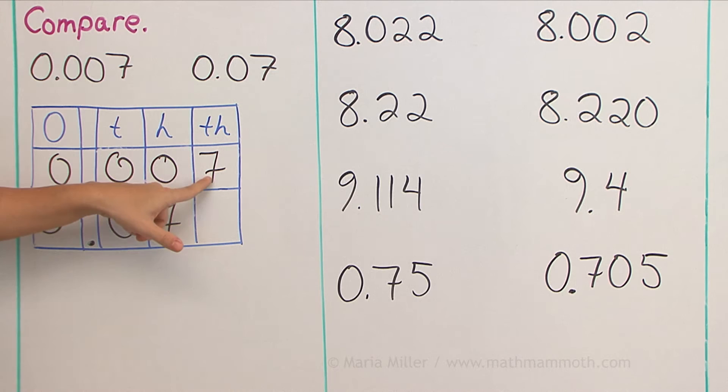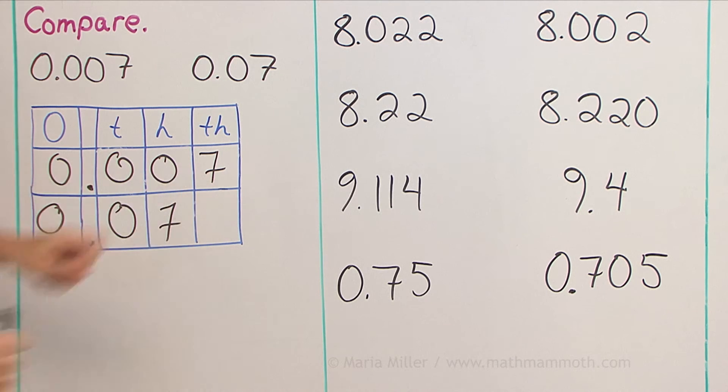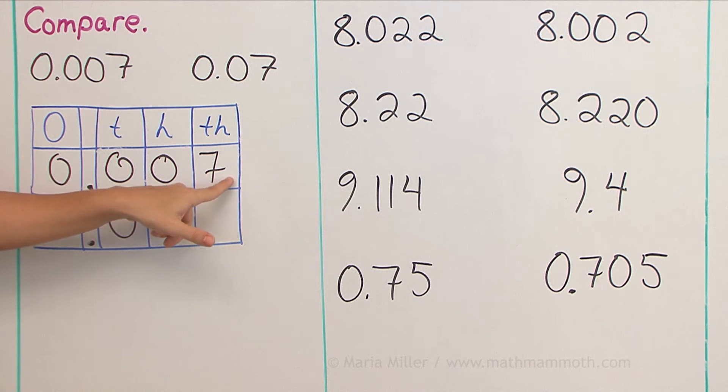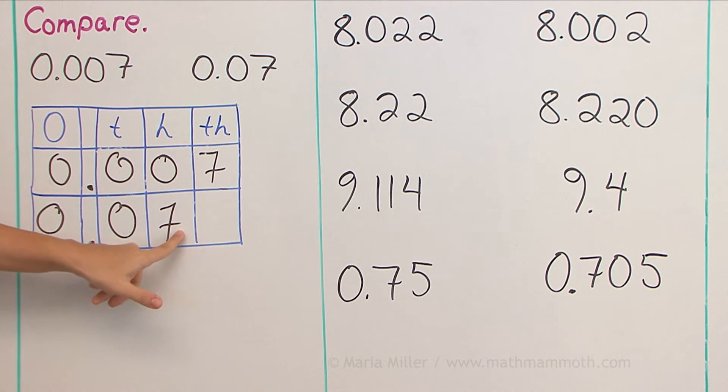Now you might ask, what about the thousandths? Well, they don't count because, as you remember, ten thousandths would make one hundredth. If I had ten here, then I would get one hundredth here. But this is less than ten. So these seven thousandths are less than one hundredth. So they don't count. When there are more hundredths here than here, then this number is bigger.